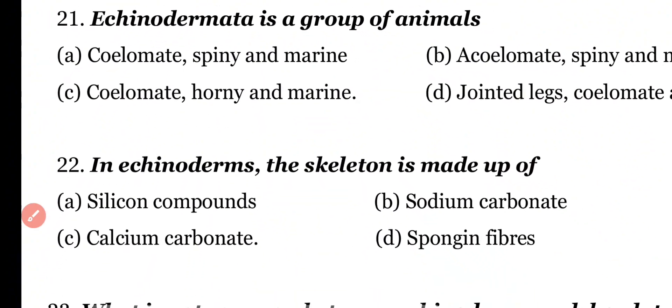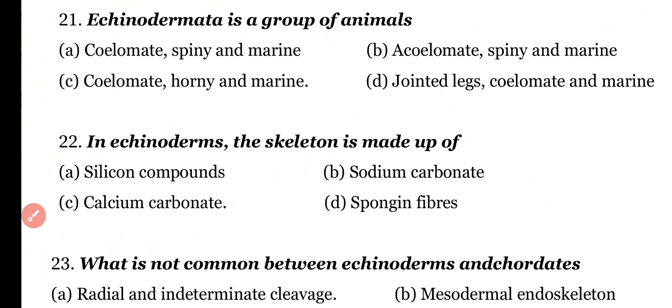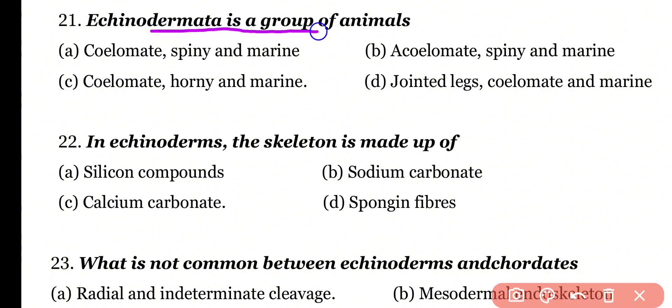Question 21: Echinodermata is a group of animals which are — Coelomate, Spiny and Marine; Acoelomate, Spiny and Marine; Coelomate, Thorny and Marine; or those with Jointed legs, Coelomate and Marine? Correct answer is Option A. Echinoderms are coelomate, spiny, and marine animals.